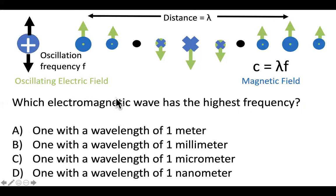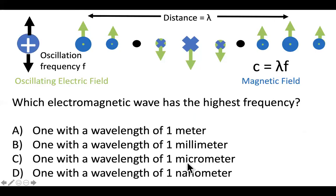A similar question: which electromagnetic wave has the highest frequency? One with a wavelength of one meter, one millimeter, one micrometer (one one-millionth of a meter), or one nanometer? The answer is D. It's the same logic: if we want f to be big, we want lambda to be small. The smallest wavelength is one nanometer, so the highest frequency must correspond to that wavelength. Similarly, the one with the longest wavelength must have the smallest frequency. This is a basic relationship I'd hope you'd understand by the end of this course.